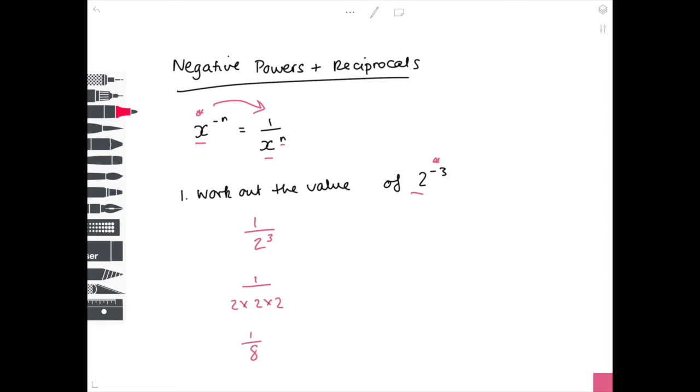Now we're working out the value of 10 to the minus 4. So I'm going to write it out in exactly the same form as before. So 10 to the minus 4 equals, and we're going to write 1 over, well what is x? Well according to our rule here it is 10.